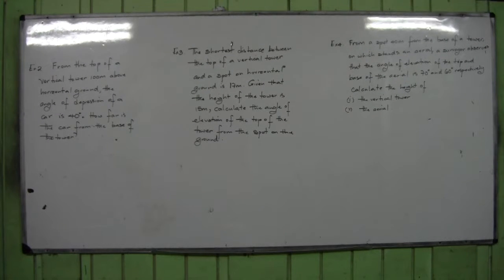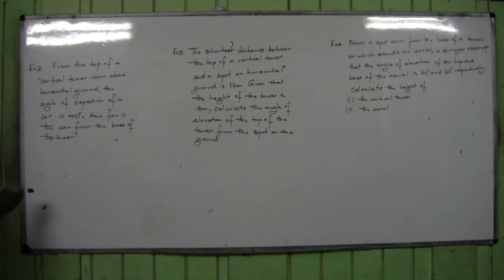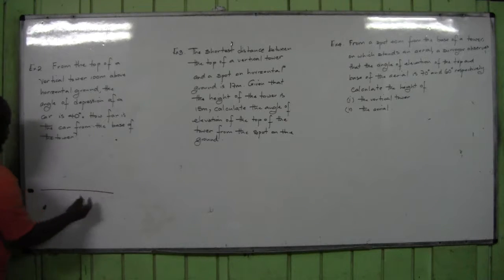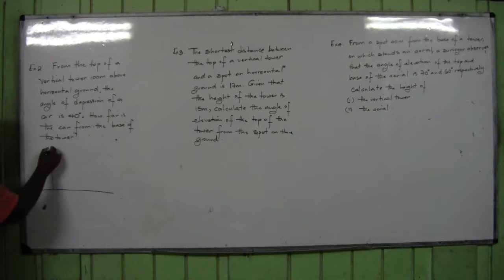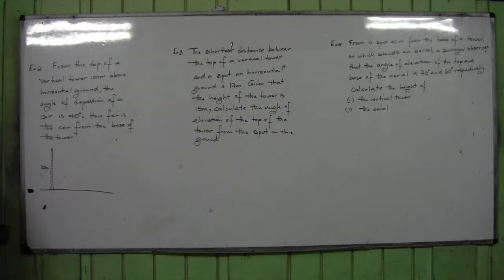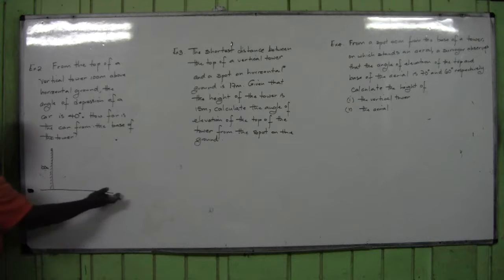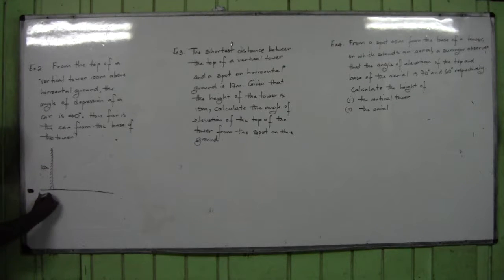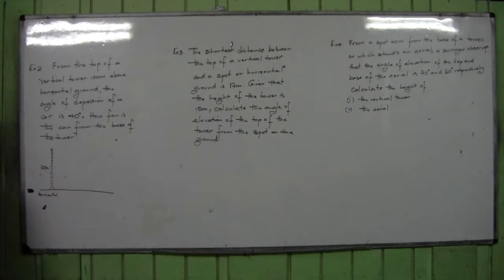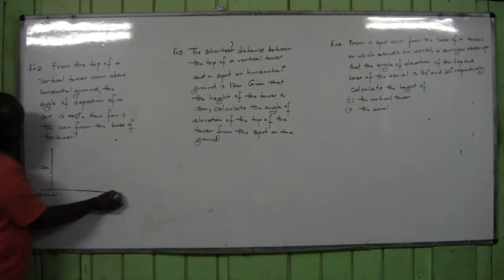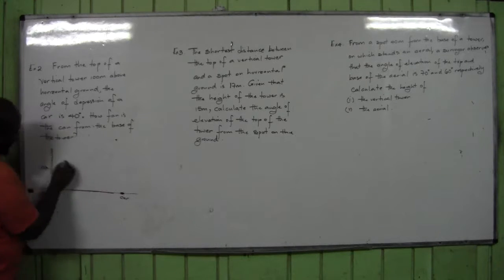Question number one: from the top of a vertical tower 100 meters above horizontal ground, the angle of depression of a car is 40 degrees. So there is a tower, and the tower is 100 meters high above horizontal ground, and this is the car with the angle of depression being 40 degrees.